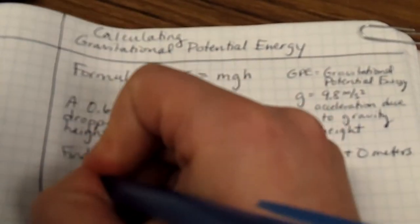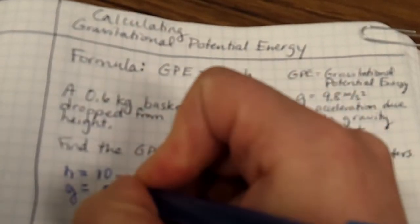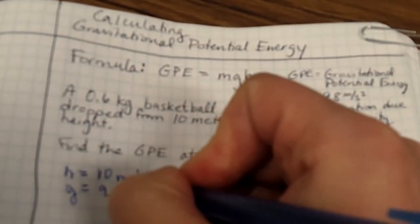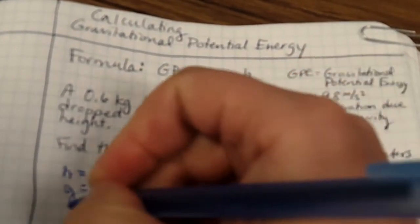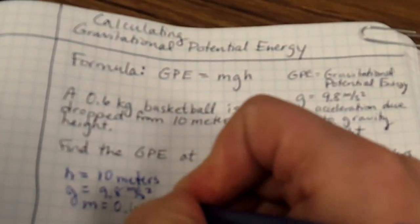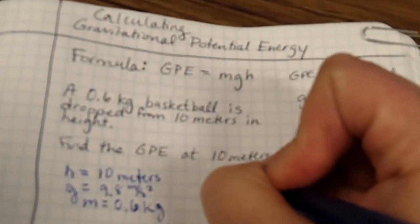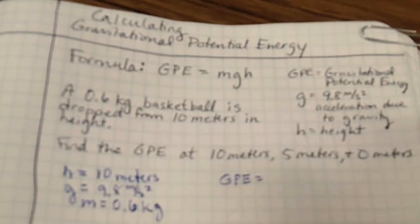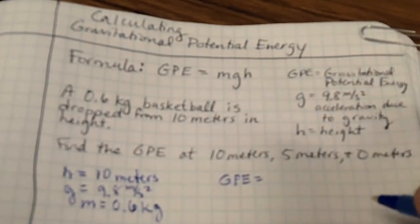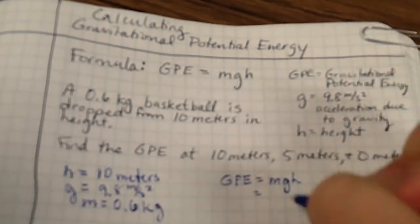First of all we have our height is equal to 10 meters. At the same time we also know that G is equal to 9.8 meters per second squared. And we have a mass of 0.6 kilograms. So we want to find out what the gravitational potential energy is. So those are our knowns and our unknown is GPE. So we're going to write the formula down. GPE equals MGH.